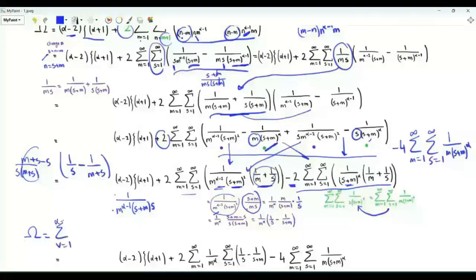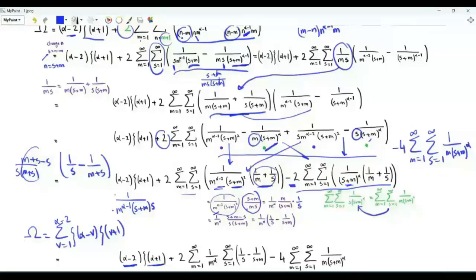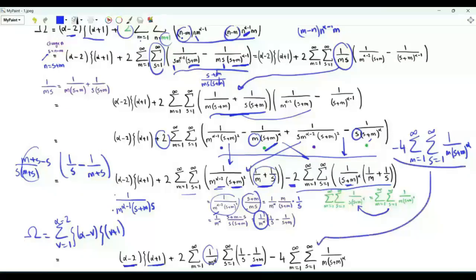So omega, which is the summation v from 1 to alpha minus 2 of zeta of alpha minus v times zeta of v plus 1, equals alpha minus 2 times zeta of alpha plus 1, plus 2 times the summation m from 1 to infinity of 1 over m to the power alpha times the summation over positive s of 1 over s minus 1 over s plus m, minus 4 times the double sum over positive integers m and s of 1 over m times s plus m to the power alpha.